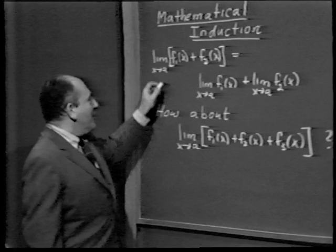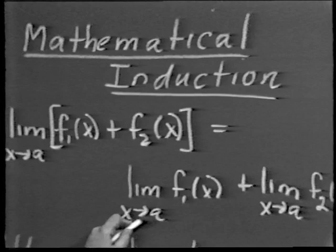Recall that in an earlier lecture, we proved that the limit of the sum is equal to the sum of the limits, provided that there are only two terms in the sum. That is, if we have two functions f1 and f2, the limit of f1(x) plus f2(x) as x approaches a equals the limit of f1(x) plus the limit of f2(x) as x approaches a.